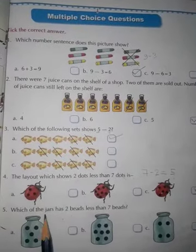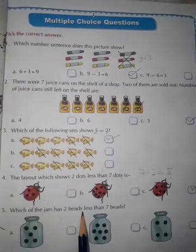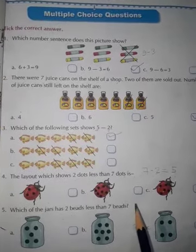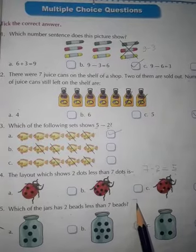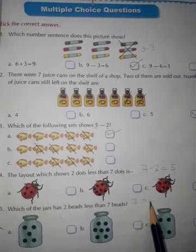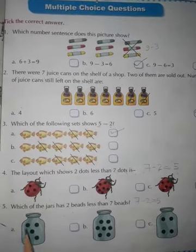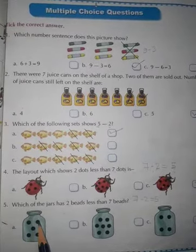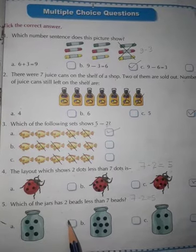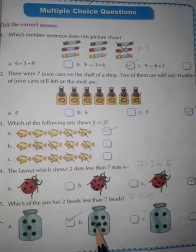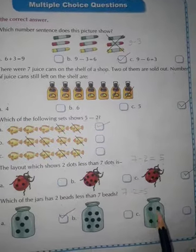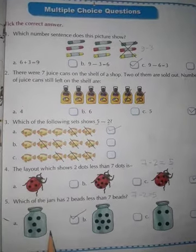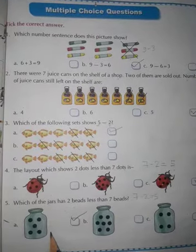Next. Which jar has two beads less than seven beads? Two beads less than seven beads means seven minus two is equal to five. So which jar has five beads? One, two, three, four, five — one, two, three, four, five — this is right. One, two, three, four, five, six, seven — this is wrong. One, two, three, four — this is also wrong. So the first one, A, is your correct answer.